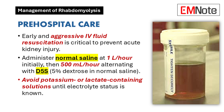Pre-hospital care. For patients with suspected rhabdomyolysis, particularly those with crush injuries or prolonged extrication times, early and aggressive intravenous fluid resuscitation is critical to prevent acute kidney injury. Normal saline should be administered at a rate of 1 liter per hour initially, followed by 500 mL per hour alternating with 5% dextrose in normal saline at 1 liter per hour. Potassium or lactate-containing solutions should be avoided until electrolyte and acid-base status is known.